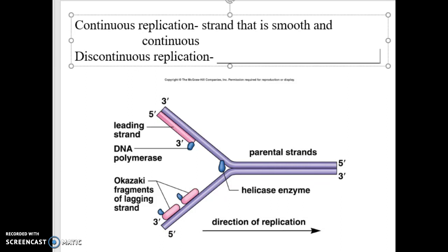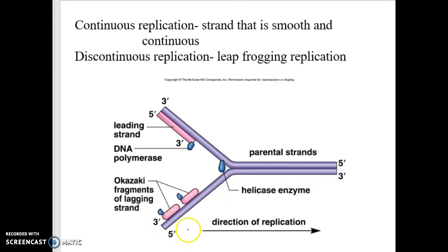The discontinuous strand is also known as Okazaki fragments. I'm not worried about you memorizing that name, but discontinuous replication does this leapfrogging replication. So, a RNA primer will be put down, and then it'll replicate, and then it'll jump backwards and replicate, and jump backwards and replicate. So, here's our Okazaki. So, it replicates like this, thinks it's done, and then it's done, and then it has to jump back, and replicate this way. Thinks it's done, then it jumps back,